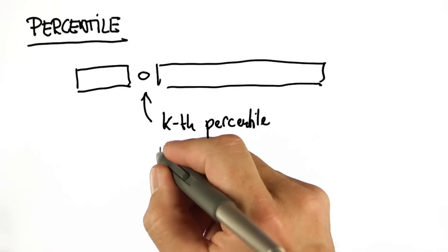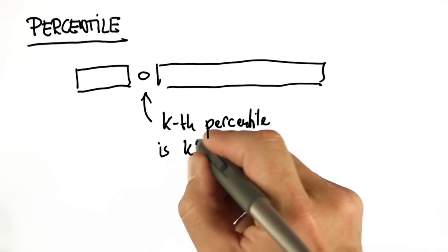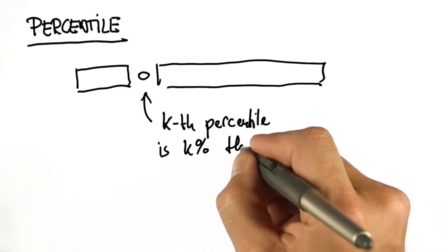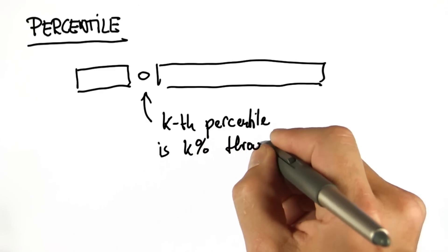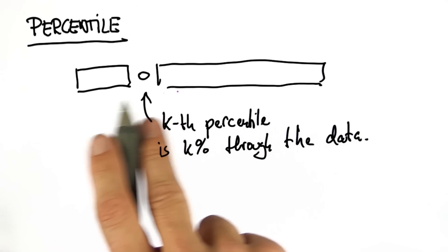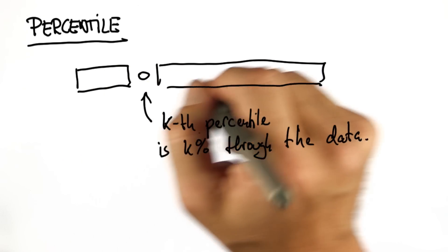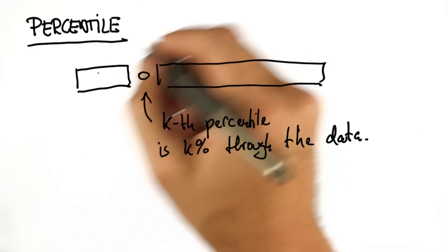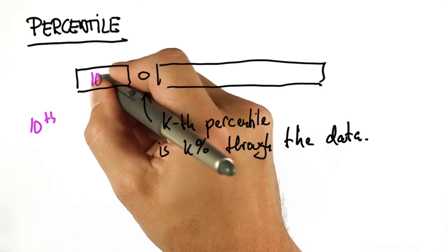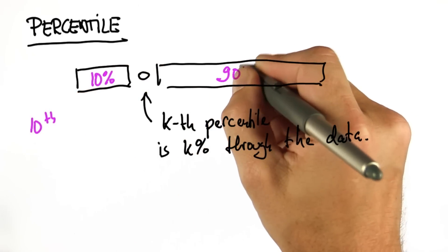Let's talk about percentile. Percentile is kind of the same thing. The kth percentile is, so to speak, k percent through the data. There are many ways to split; the one I'll adopt is, let's say, for the 10th percentile — this is 10% and this is 90%.